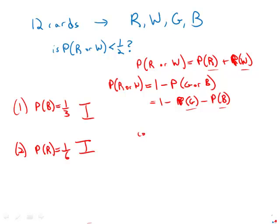Now if we combine the statements, we know probability of red, but we don't know the probability of white, so we can't figure it out that way. We know the probability of blue, but we don't know the probability of green, so we can't figure it out that way.